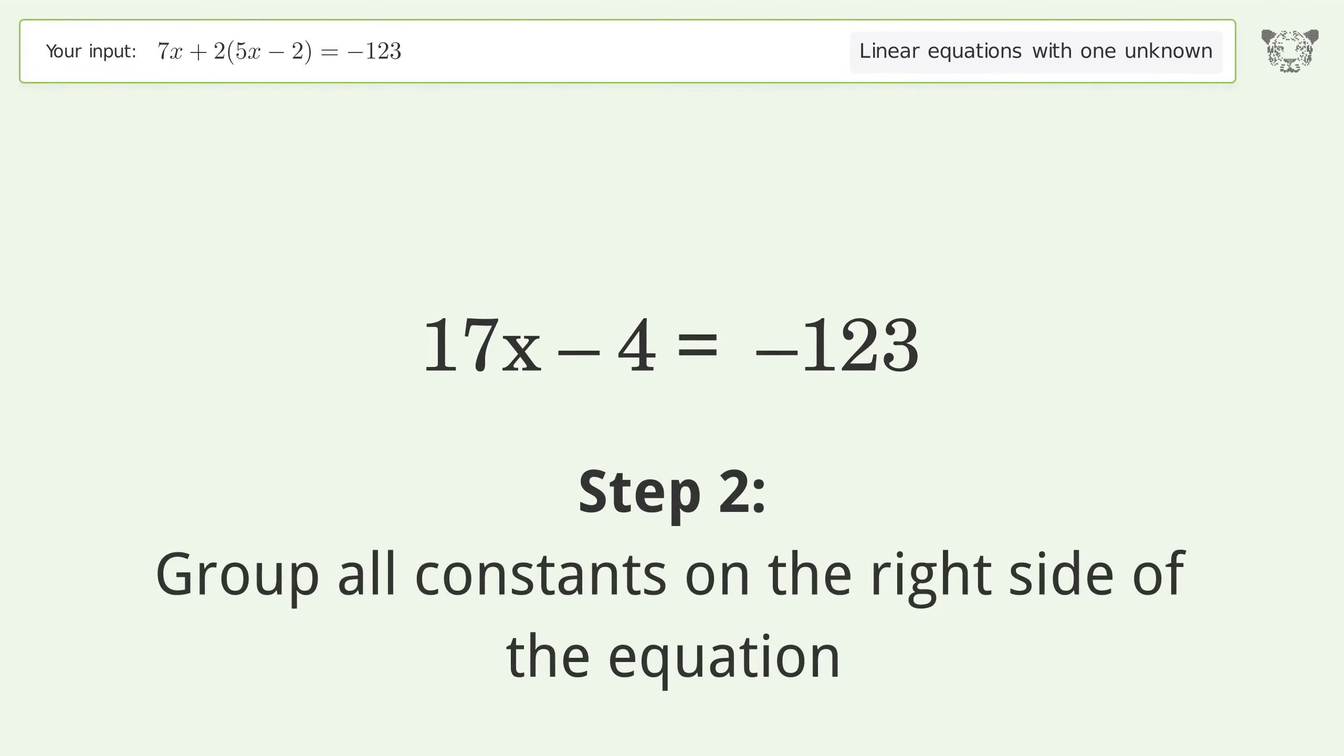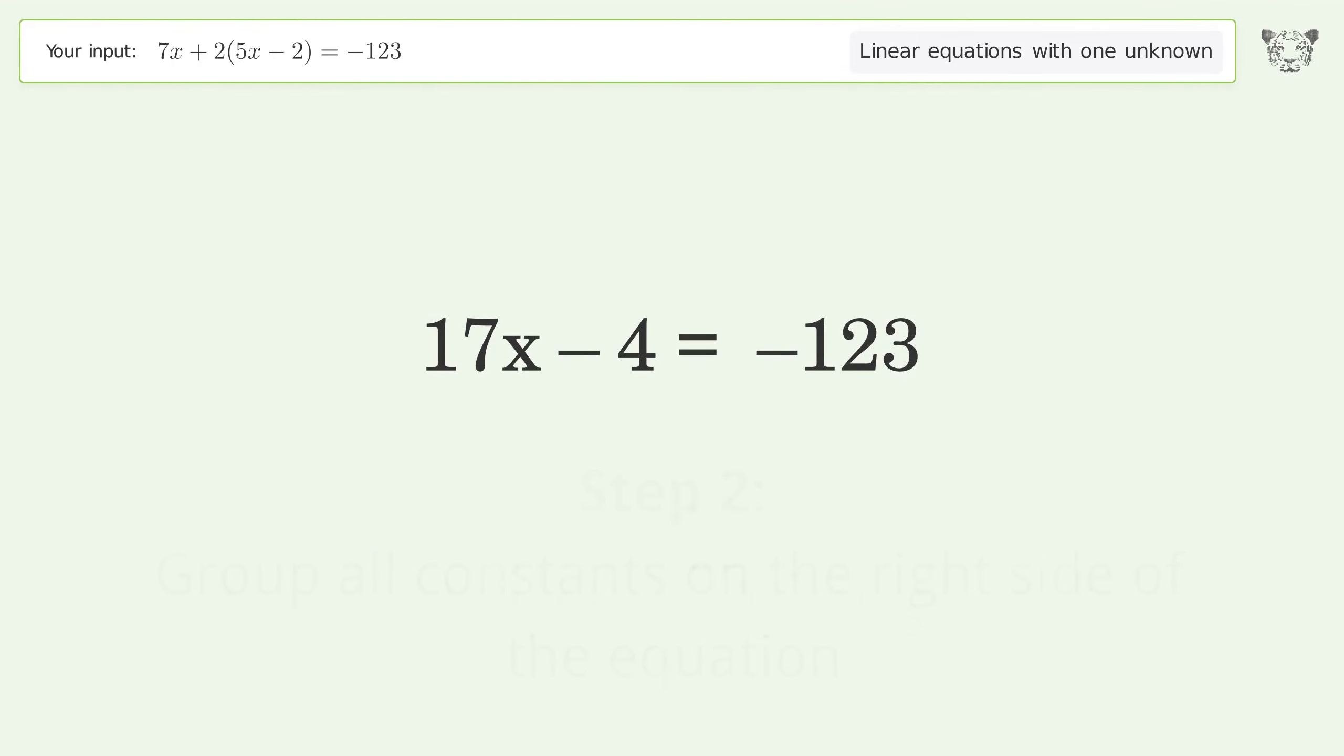Group all constants on the right side of the equation. Add 4 to both sides. Simplify the arithmetic.